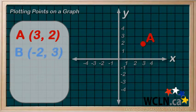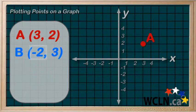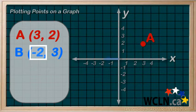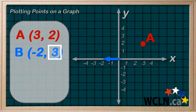Let's try another. Point B with coordinates negative 2, 3. Again, the x value comes first, the negative 2. So on the x-axis, the negatives are to the left, and here's negative 2. The y value, the second number, is positive. So we go up 3. And we find our point B right here, at negative 2, 3.